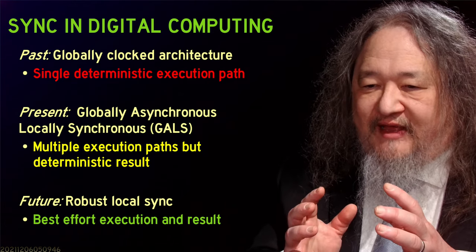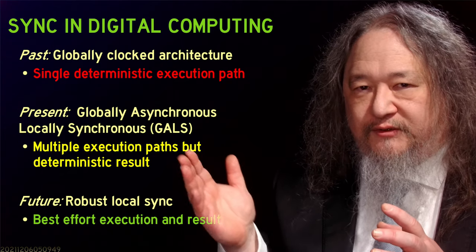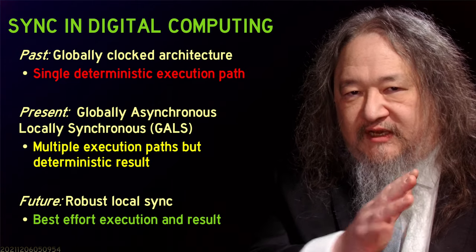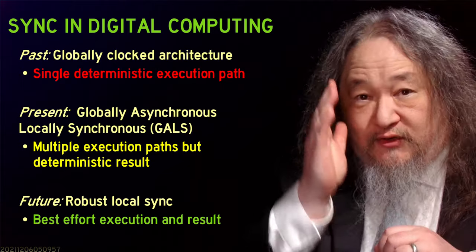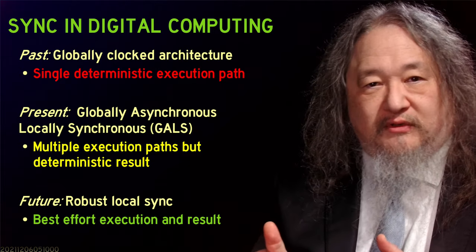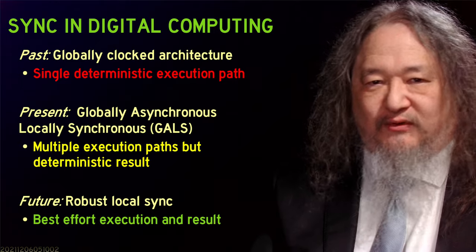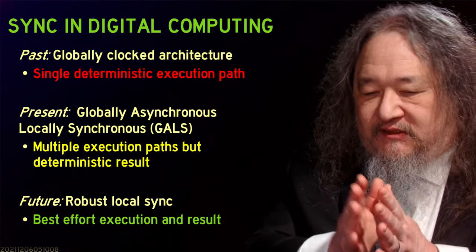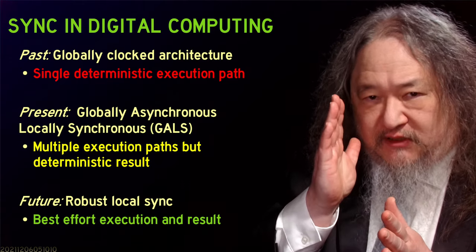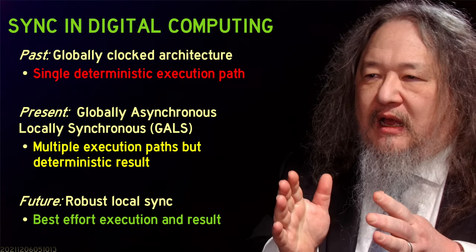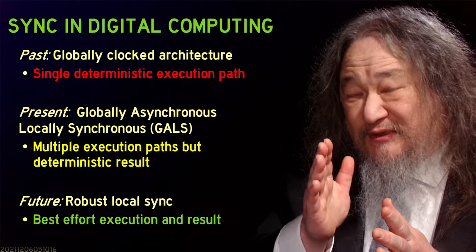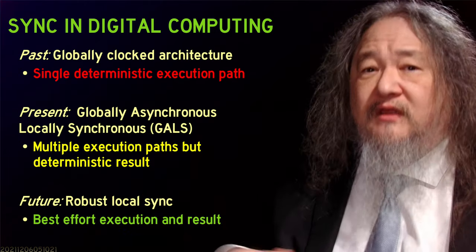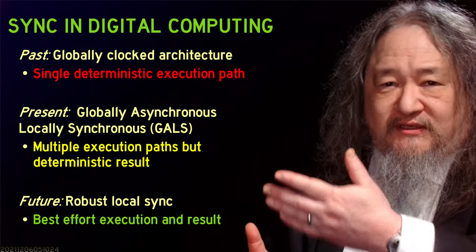Globally clocked architecture has been the backbone that powered the whole computer revolution in terms of the individual machine. The goal is to get this single deterministic execution path — the idea being that once you know the current states of all the things that are inputs to you, and then you get the clock edge, you produce a guaranteed output. I am the AND of my inputs, or the OR of my inputs, or the sum of my inputs. Each individual step is absolutely predicted by the previous step, so the prediction of the entire program overall is also absolutely deterministic.